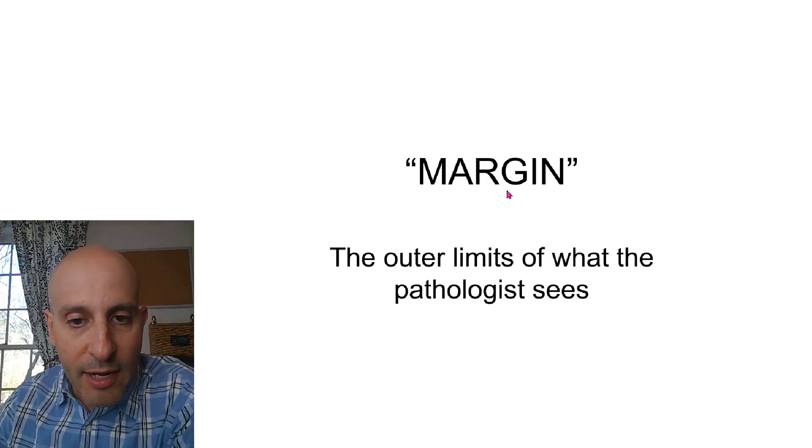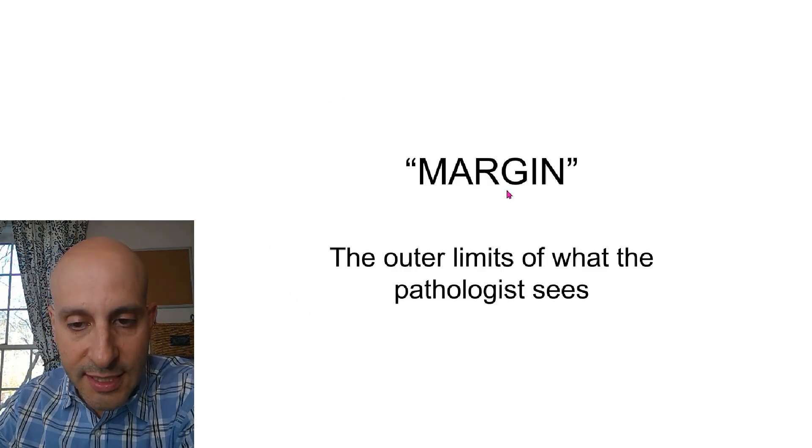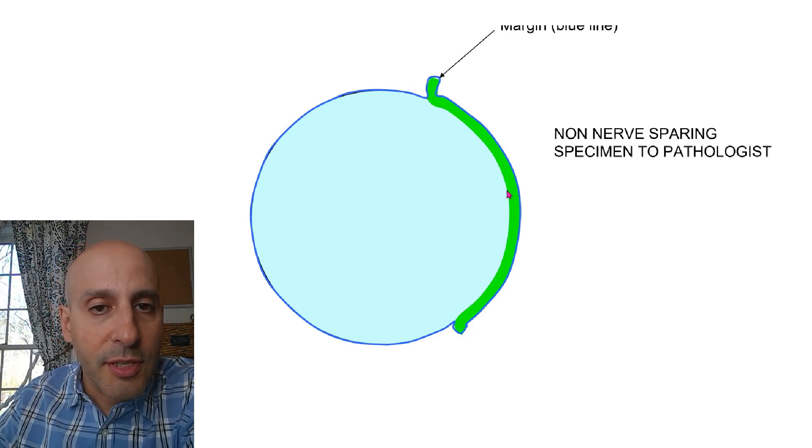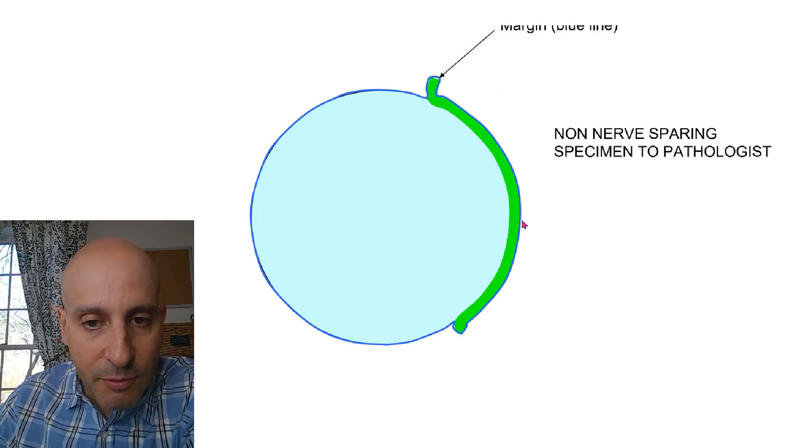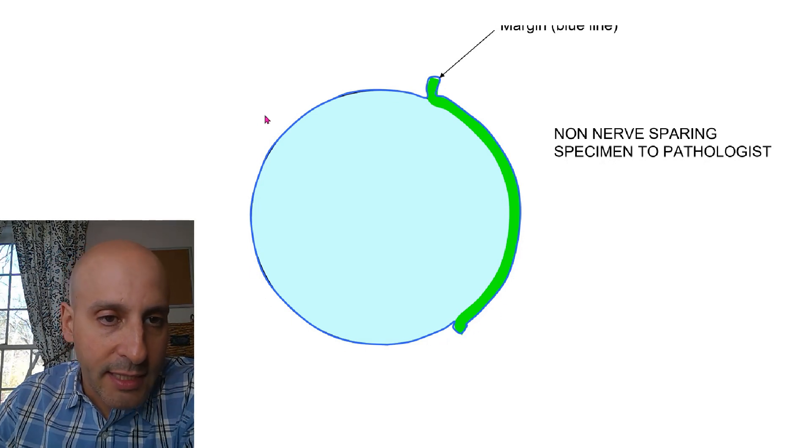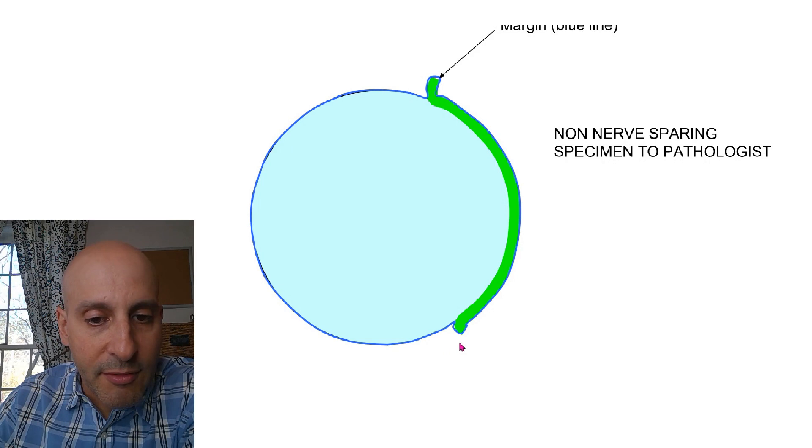Now, the margin is simply the outer limits of what the pathologist sees. As soon as the pathologist receives the specimen, they paint it with blue ink. And that blue line from that point forward, when they look under the microscope and they see it, that's the outer limit of the whole specimen that they received.